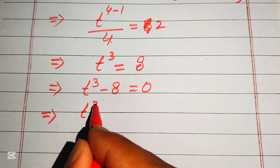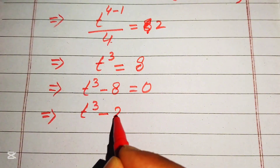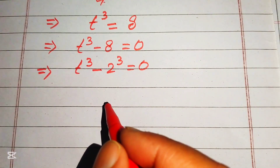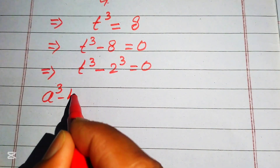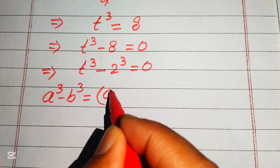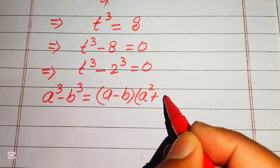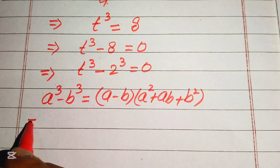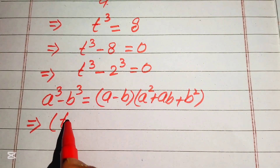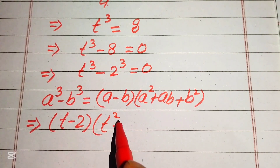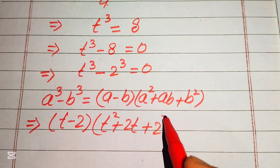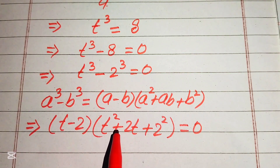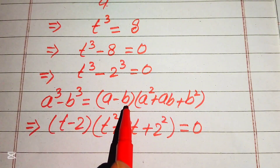We rewrite 8 in prime factor form as 2 cubed, giving t cubed minus 2 cubed equals 0. We apply the difference of cubes formula: a cubed minus b cubed equals (a minus b)(a squared plus ab plus b squared). Applying this, the equation becomes (t minus 2)(t squared plus 2t plus 2 squared) equals 0.